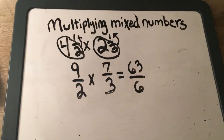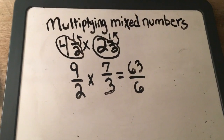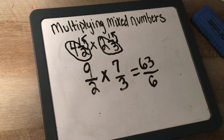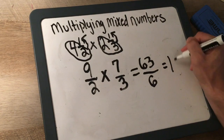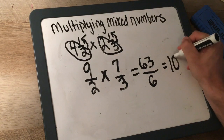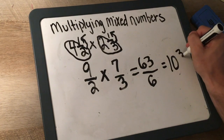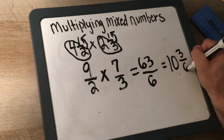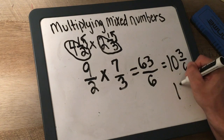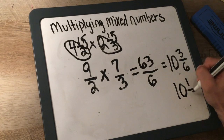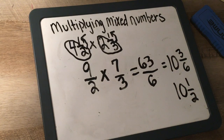Now we have an improper fraction. We have to change that to a mixed number. How many times does 6 go into 63? 10 times. Now what's left over? 3. And we keep the denominator. So we get 10 and 3/6. We can't just leave it like that — we have to reduce the 3/6. How many times does 3 go into 6? Twice. So we get 10 and 1/2 as our final answer.